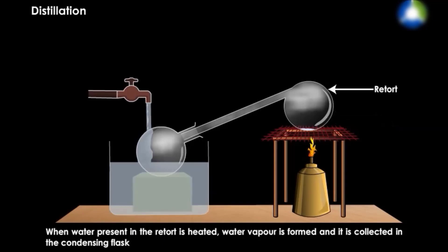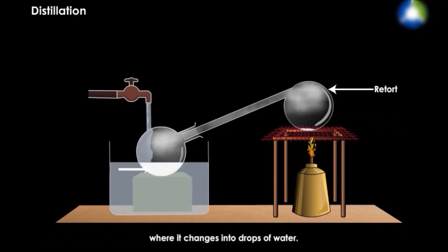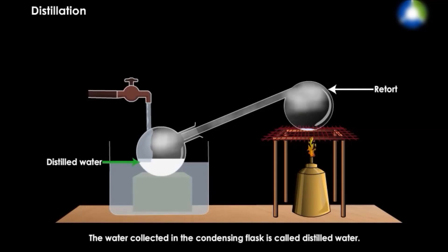Where it changes into drops of water. Salt is left behind in the retort. And the water collected in the condensing flask is called distilled water, or pure water.